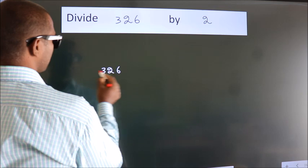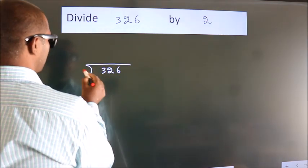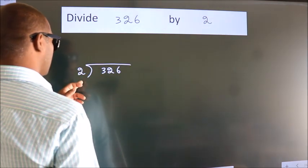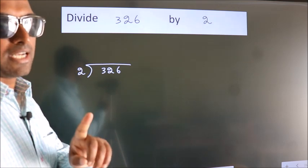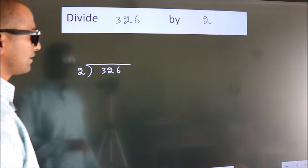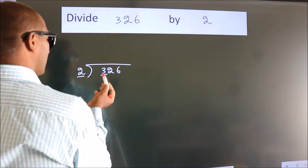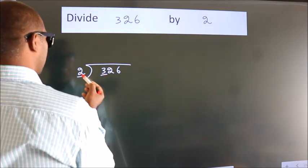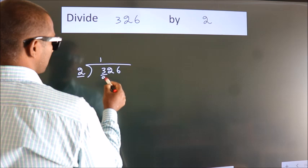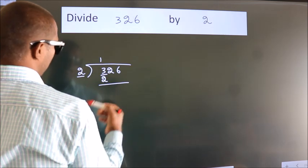326 here, 2 here. This is step 1. Next, here we have 3, here 2. A number close to 3 in the 2 table is 2. 1 times 2.